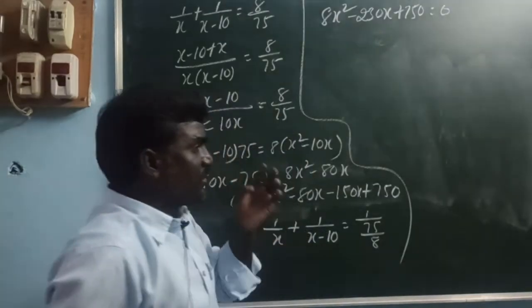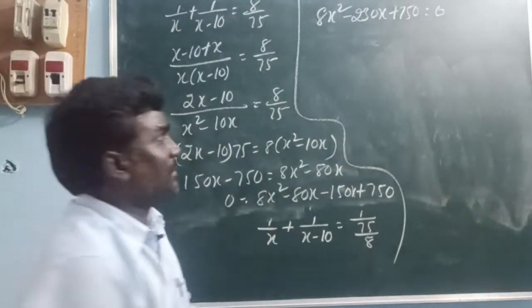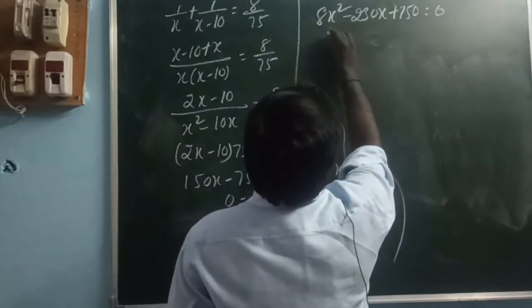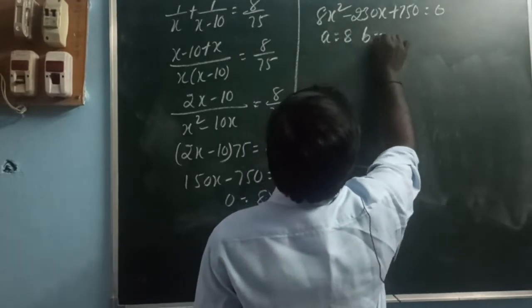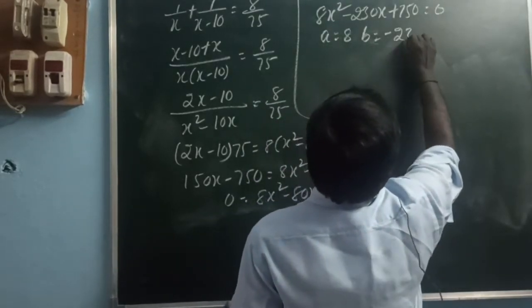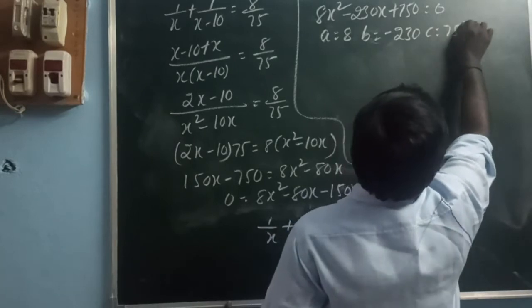We solve this using the quadratic formula with a = 8, b = −230, c = 750.